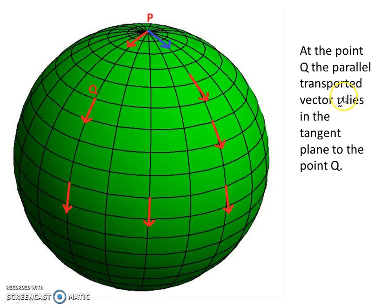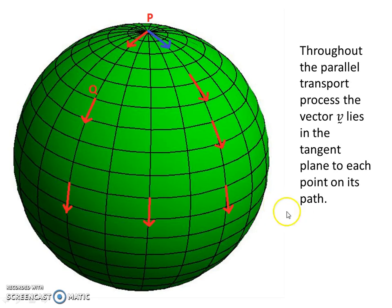So at the point Q, the parallel transport of vector v lies in the tangent plane to the point Q. Throughout the parallel transport process, the vector v lies in a tangent plane to each point on its path. We move it incremental amounts, keeping it parallel to itself, but staying attached to the surface, tangent to the surface.